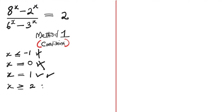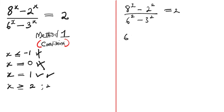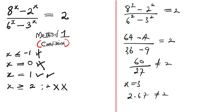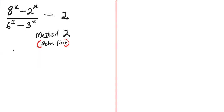Now let's consider x greater than or equal to 2 — we'll use x = 2. We have 8 squared minus 2 squared, divided by 6 squared minus 3 squared, which should equal 2. That is (64 - 4)/(36 - 9) = 60/27, which is not equal to 2. If you also consider x = 3, you get approximately 2.67, which is also not equal to 2. So this is not part of the solution.